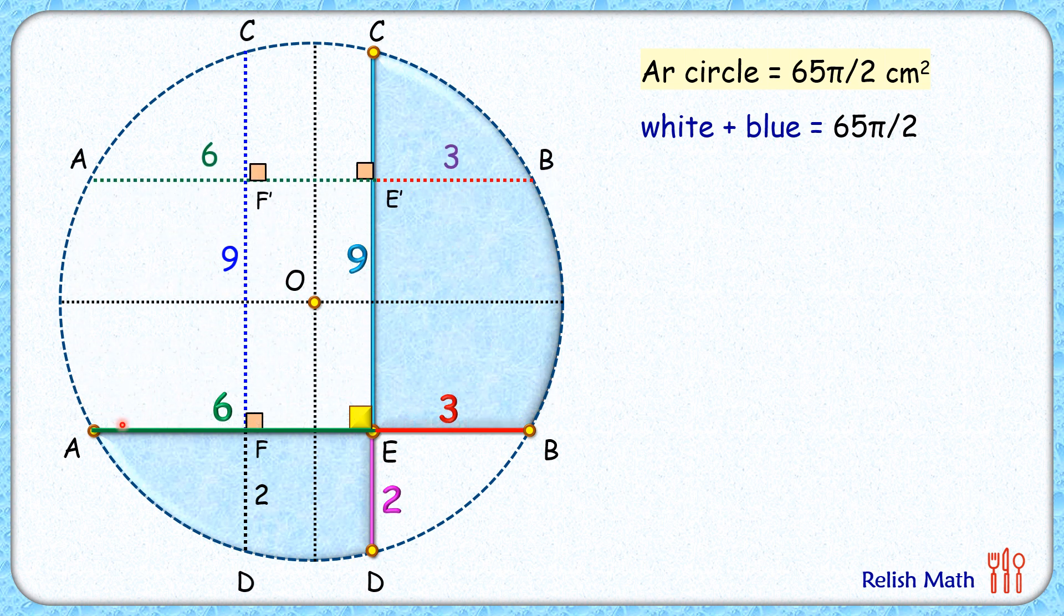Here, as this is a mirror image, we can say AF will be the same as the mirror image EB, so AF length will be 3 cm and FE length will be 6 - 3 or 3 cm. Same way, length CE' will be the same as the mirror image ED, so CE' is 2 cm and E'E will be 9 - 2 or 7 cm.